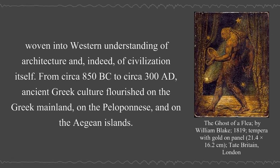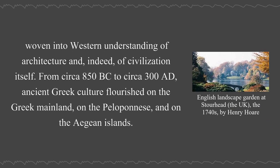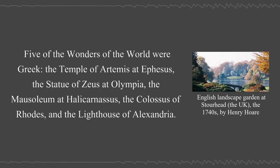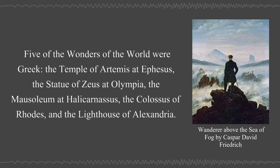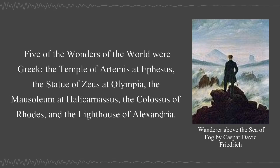From circa 850 BC to circa 300 AD, ancient Greek culture flourished on the Greek mainland, on the Peloponnese, and on the Aegean islands. Five of the wonders of the world were Greek: the Temple of Artemis at Ephesus, the Statue of Zeus at Olympia, the Mausoleum at Halicarnassus, the Colossus of Rhodes, and the Lighthouse of Alexandria.